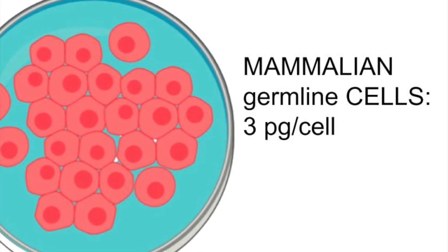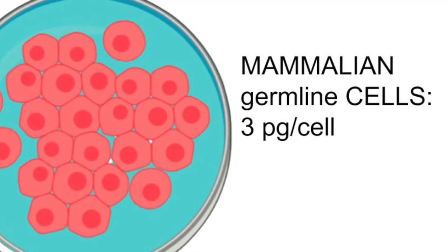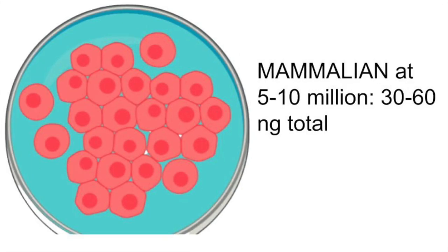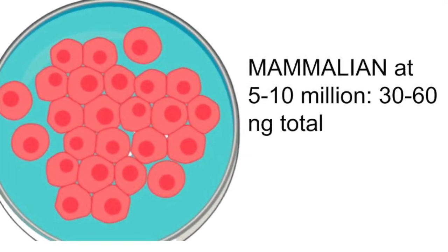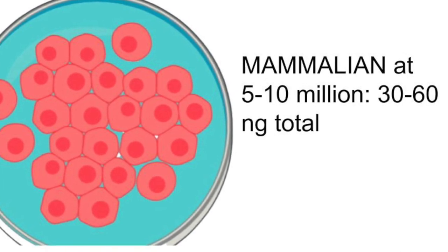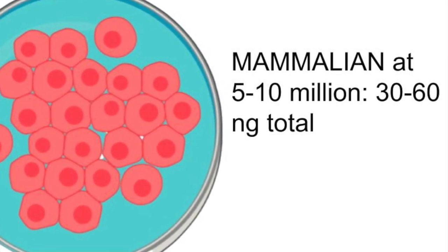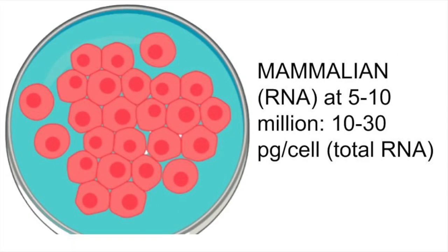So let's say we've got about five to ten million cells that we're extracting DNA from. Then theoretically we can expect about 30 to 60 nanograms of DNA.